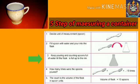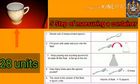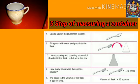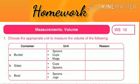The fourth step: count how many times the spoon was poured. The fifth step: that count is the volume of the cup in spoon units. The volume of this cup was 28 units. In such manner we can find the volume of any container.